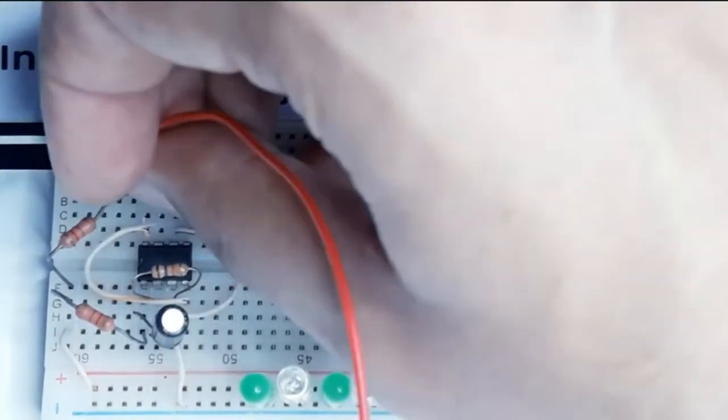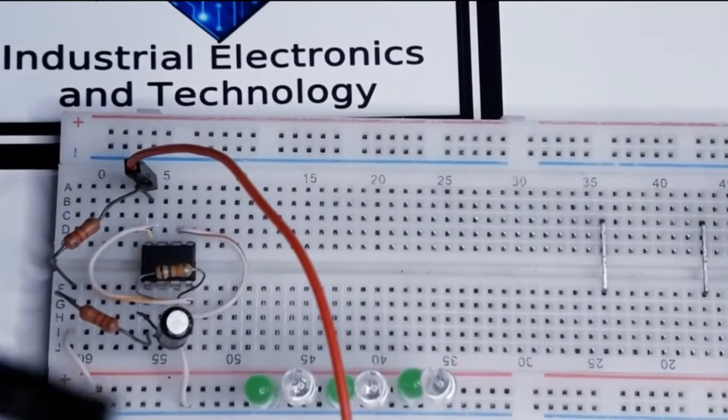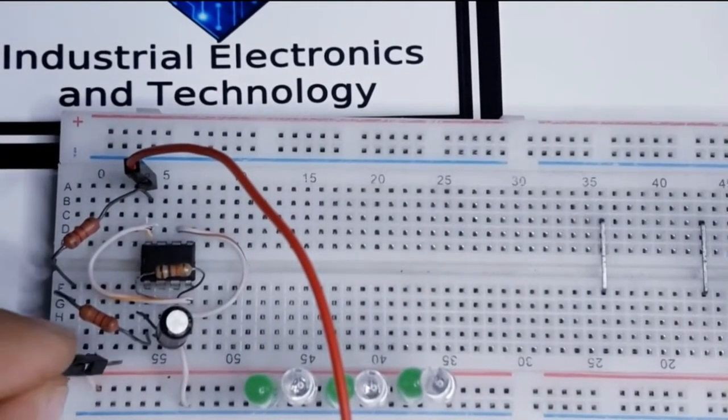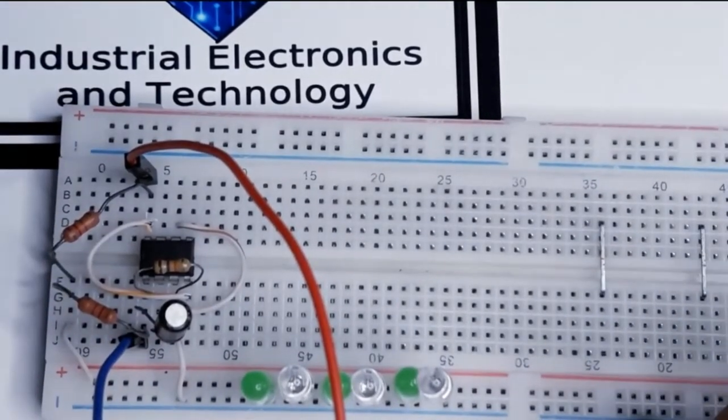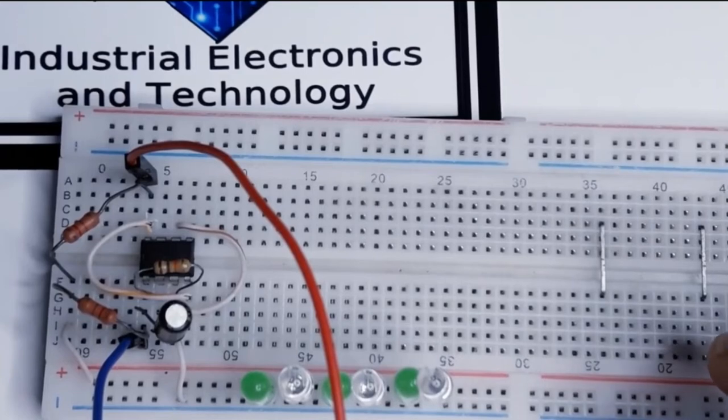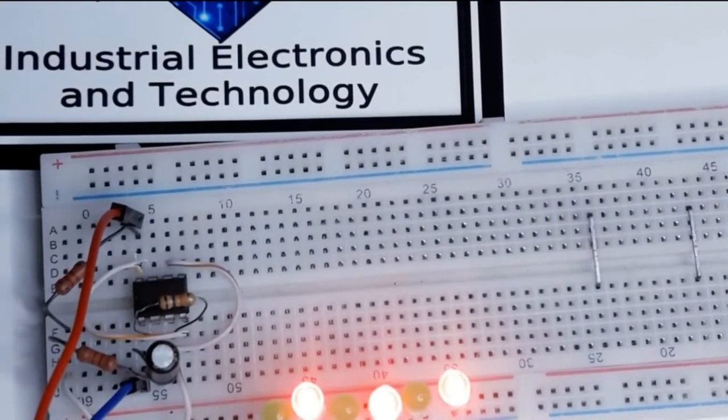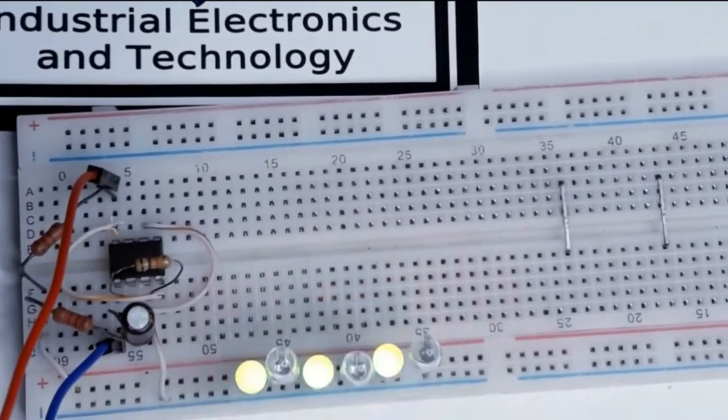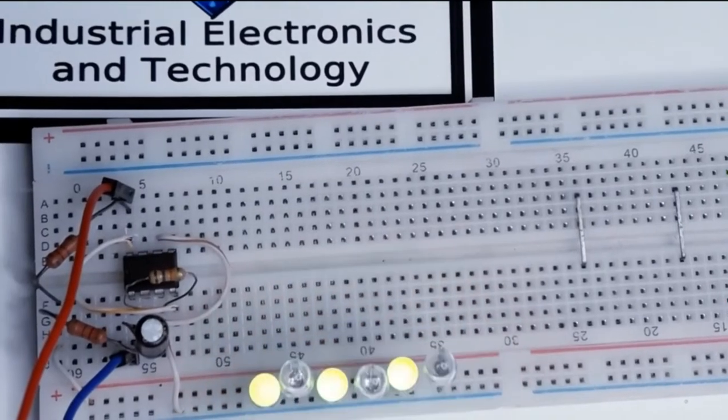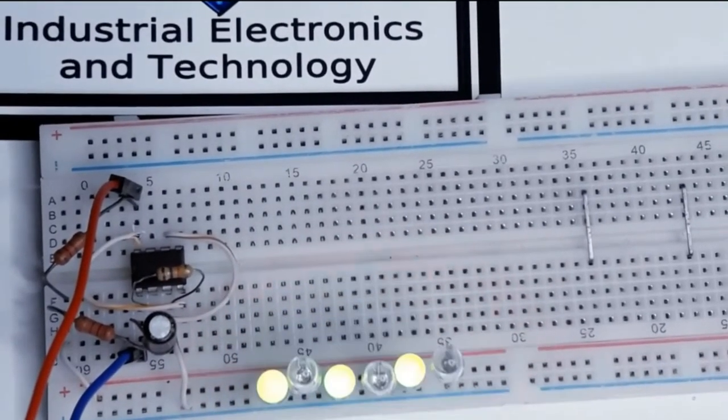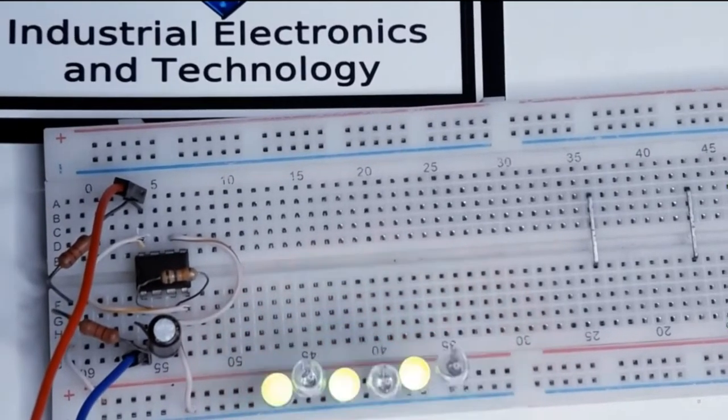And the negative side will go to pin number one of the 555 timer. Now let's check the circuit. As you can see, it is blinking. Thanks for watching, please do subscribe to my channel. This circuit diagram is also provided in the end.